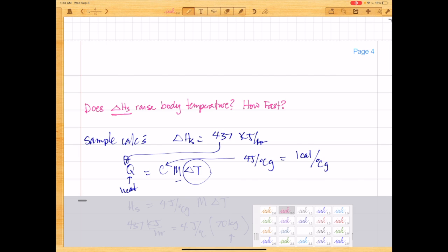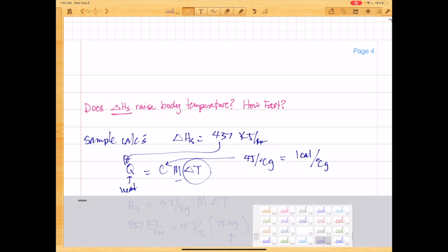But the question is, does delta HS raise body temperature? And if so, how fast? So from our sample calculations handout, we had a problem where the delta HS is 437 kilojoules per hour for a human being who has a mass of 70 kilograms.